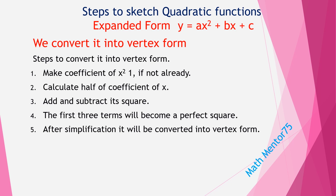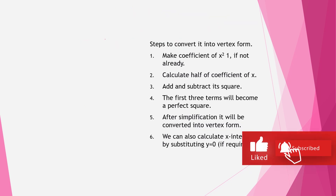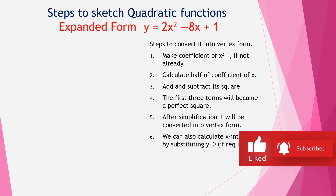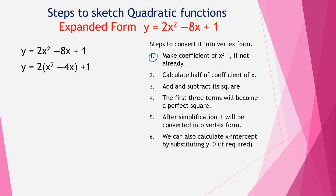Now let's do one example using expanded form. We have y = 2x² − 8x + 1. Following the first step, we check whether the coefficient of x² is one — it is not; the coefficient is two. So we take two as a common factor, giving us the coefficient of x² equal to one inside the brackets.